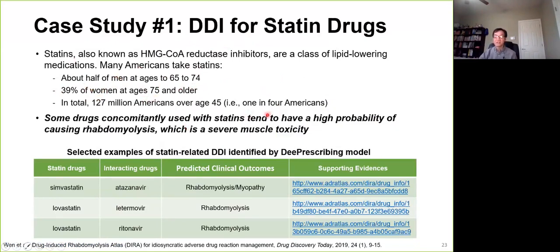In summary, actually one in four Americans has a chance to take statin drugs. It is reported some drugs co-administered with statin drugs tend to have high probability to cause rhabdomyolysis, which is a severe muscle toxicity. We can perhaps assess the drug-drug interactions related to statin drugs. We get pretty interesting results. Here you can see some examples. Statin drugs with antiviral drugs have high probabilities to cause rhabdomyolysis. Now everybody knows we are in a pandemic of the COVID-19 coronavirus, and a lot of drug repositioning approaches use antiviral drugs to treat COVID-19. You can see if the patients have conditions like high cholesterol, you really need to pay attention to using antiviral drugs with that, because they take statin drugs most of the time.